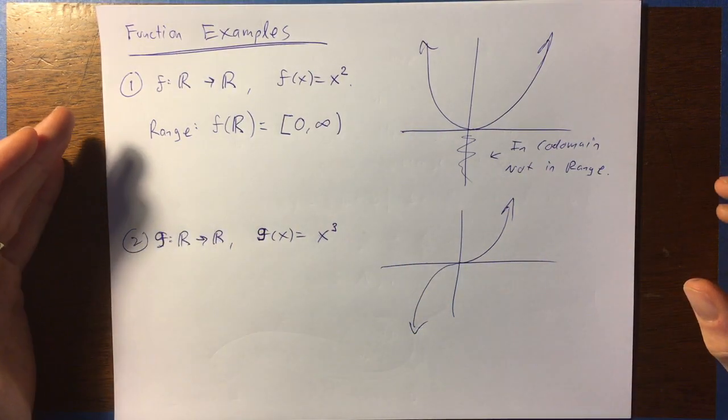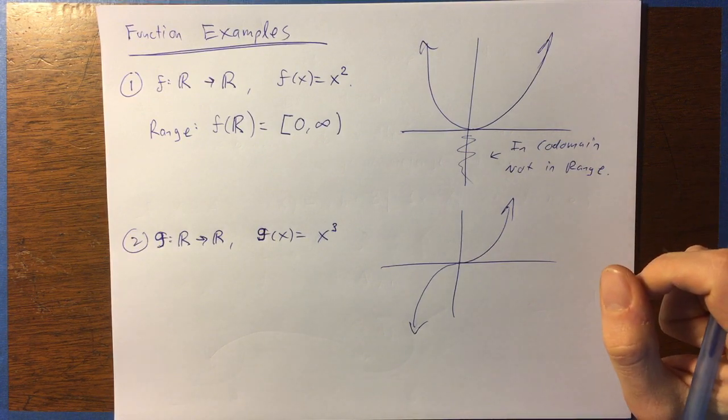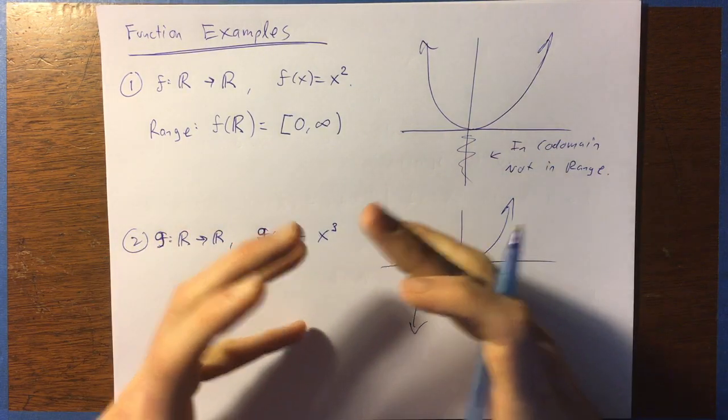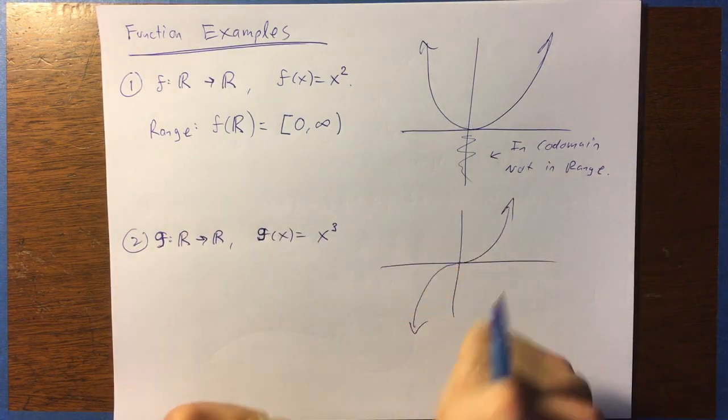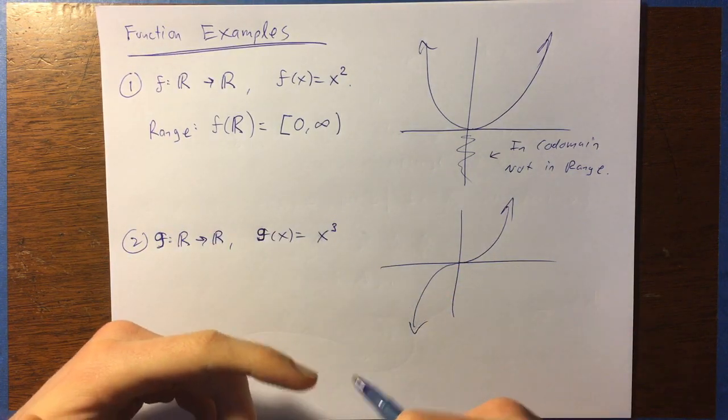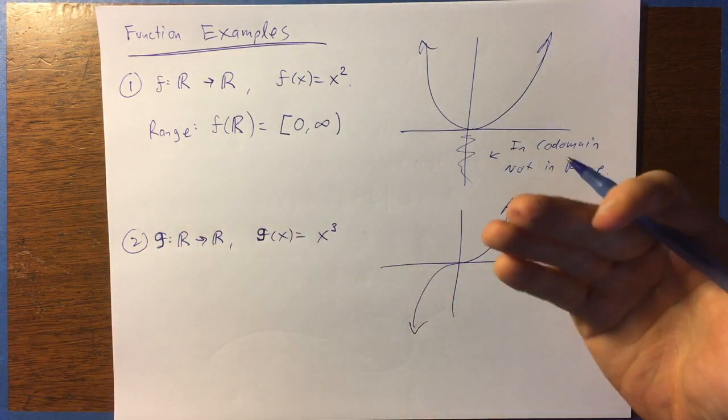If you take the, if you take, well, sorry, that's not called a restriction. That's something slightly different. But it's essentially restricting the codomain to be just the range. But that would be technically changing the function to be a different function a little bit.